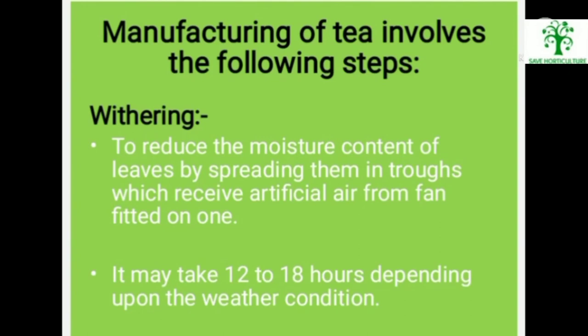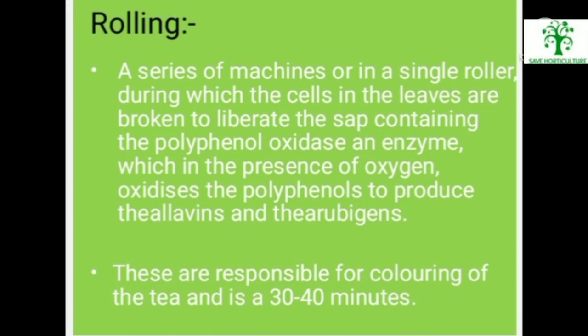Manufacturing of tea involves the following steps. Withering: to reduce the moisture content of leaves by spreading them in troughs which receive artificial air from a fan. It may take 12 to 18 hours depending upon weather conditions. Rolling: a series of machines or a single roller during which cells in the leaves are broken to liberate the sap containing polyphenol oxidase enzyme, which in the presence of oxygen oxidizes polyphenols to produce theaflavins and thearubigins, responsible for coloring of tea — takes 30 to 40 minutes.